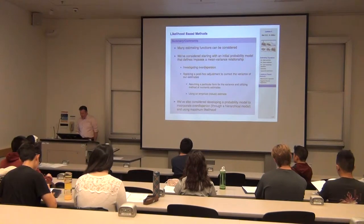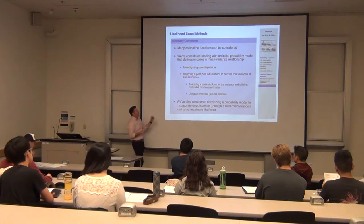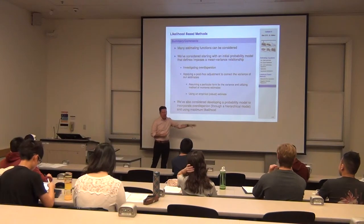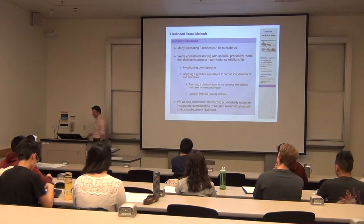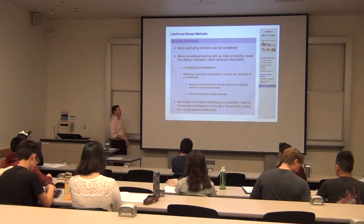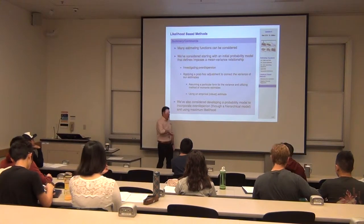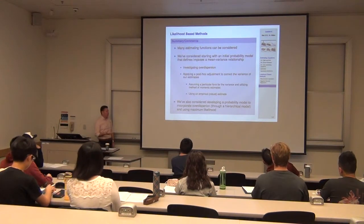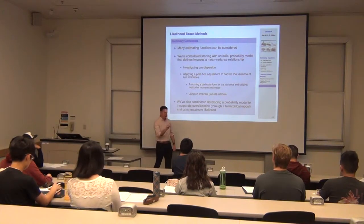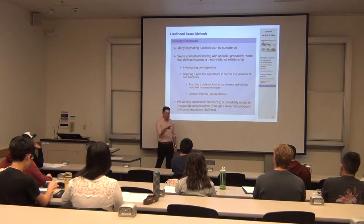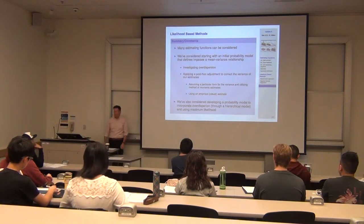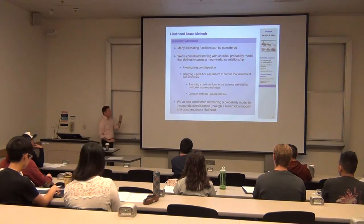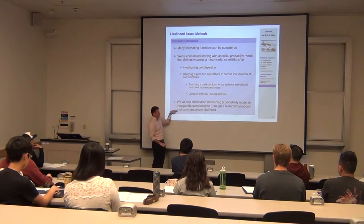My general strategy is: I start off by considering some initial probability model — something I'll consider a reasonable starting point. Then I'll step back and investigate over-dispersion: how often am I off from my reasonable starting point? Then I'll apply some sort of post-hoc correction in order to draw inference on the population parameters from those estimates.